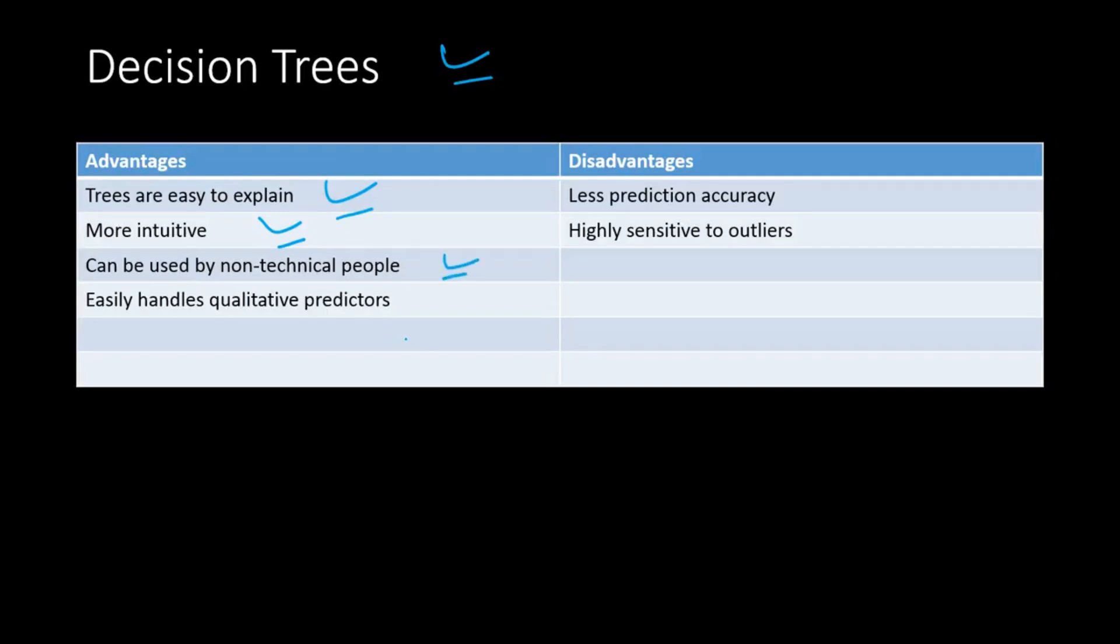And it can be used by non-technical people, people who do not come from data analysis background. And one of the good things about decision tree from a data scientist point of view is that you don't have to convert all the qualitative variables or categorical variables into dummy ones before using them in the model. That's easy because it automatically takes into consideration while partitioning.